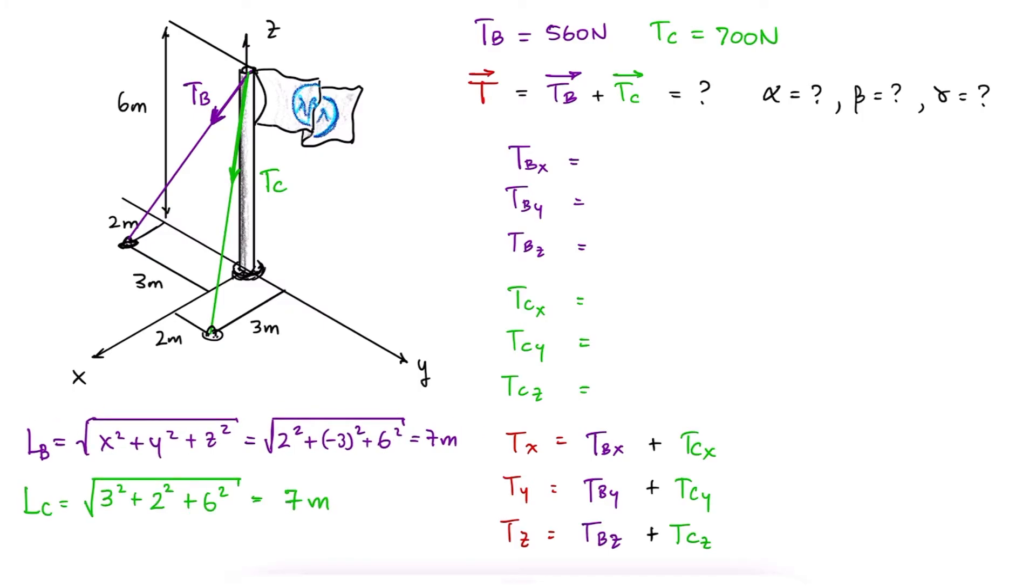The x component of Tb would therefore be the x distance over the length of the cable times the tension itself. This comes from the fact that the component of the force Tb in the direction of Ba can be found by multiplying Tb by cosine of theta. If that component, or hypotenuse on the horizontal plane xy, is then multiplied by sine of phi, we would be finding the component of the force on the side opposite to phi, which is the x component.